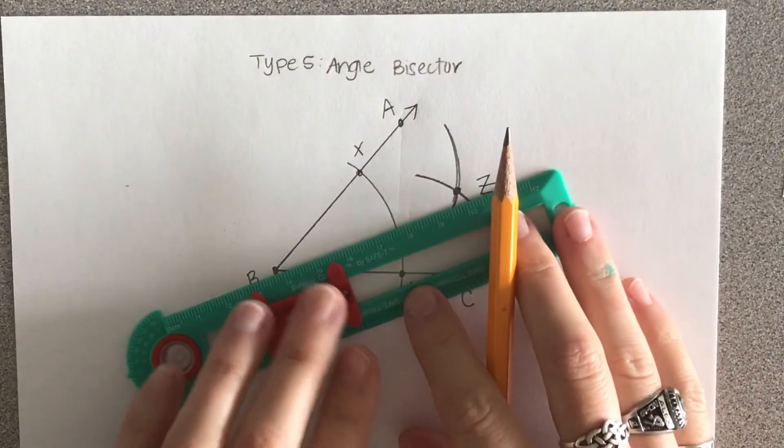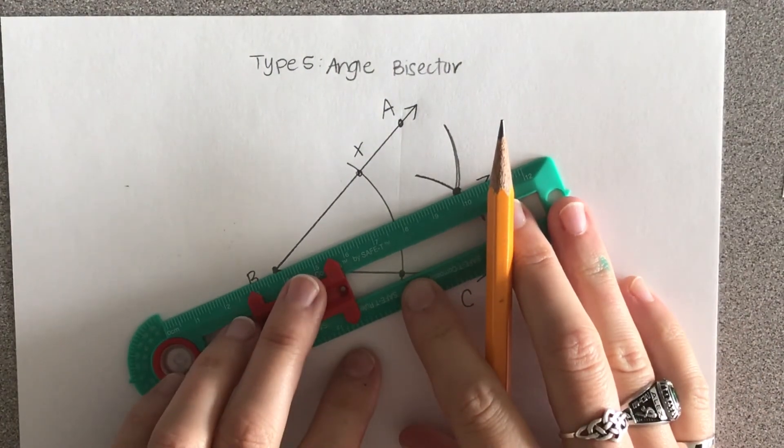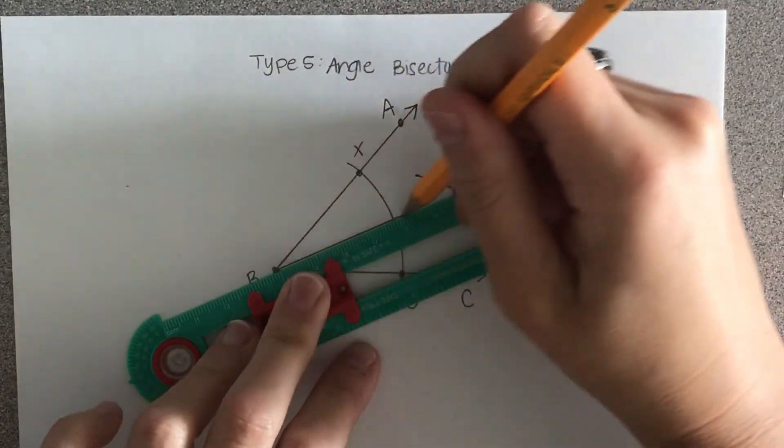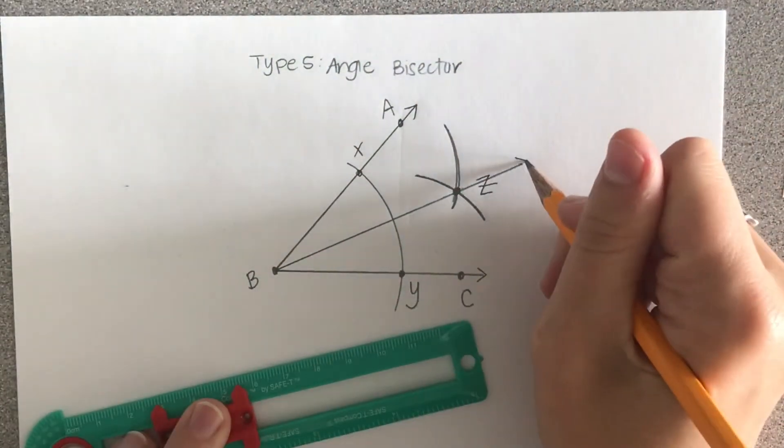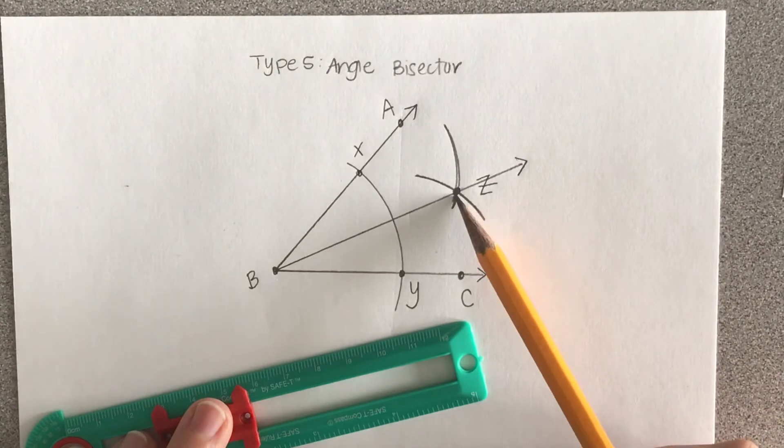I'm going to take the straight edge and connect B to Z, making a nice straight line. I now have an angle bisector.